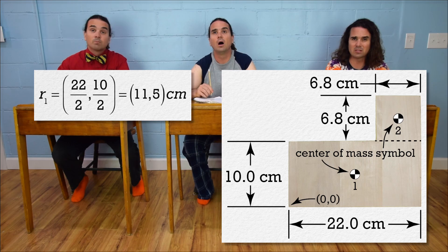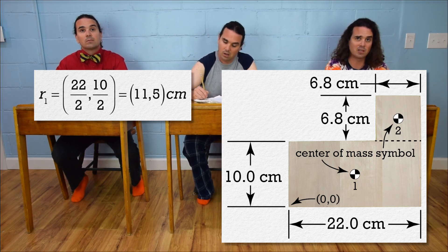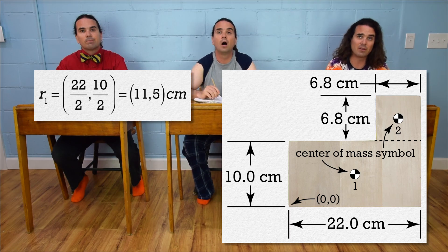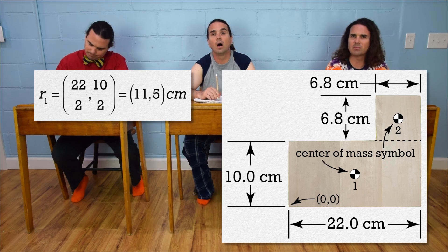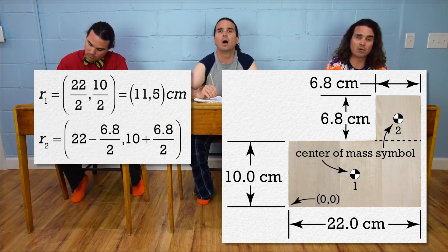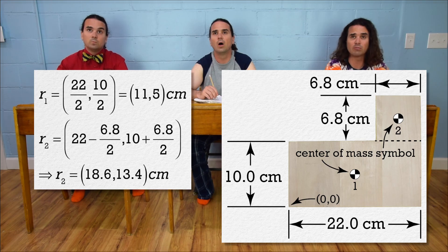The center of mass of piece 2 is at the center of piece 2, which is half of 6.8 or 3.4 centimeters in the x and y directions from the lower left-hand corner of piece 2. However, we need those distances from the origin. The x-position of piece 2 is at 22 minus 3.4 or 18.6 centimeters and its y-position is at 10 plus 3.4 or 13.4 centimeters.